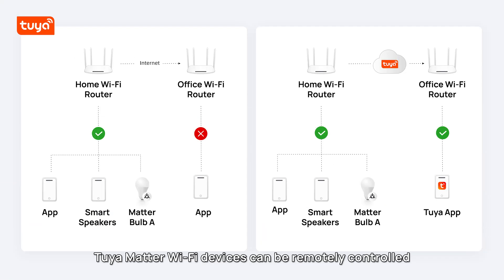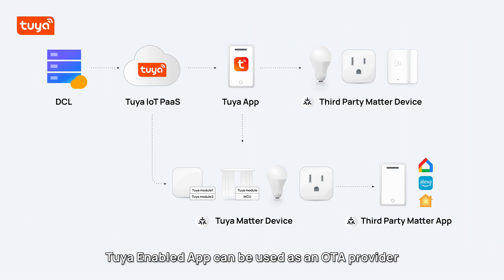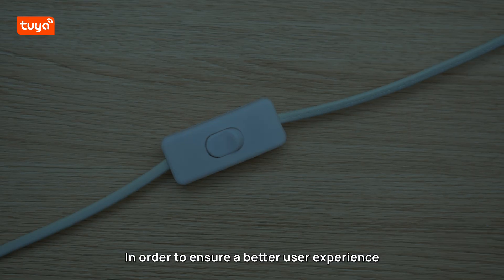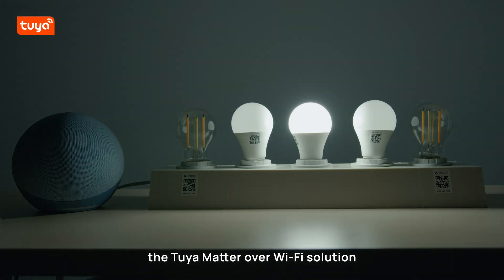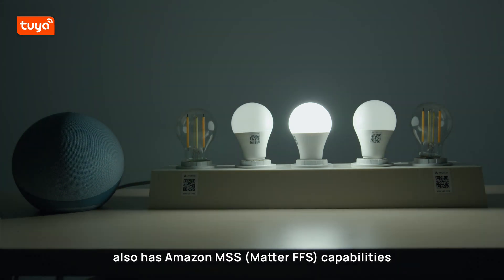Tuya Matter Wi-Fi devices can be remotely controlled through Tuya IoT without any hub. The Tuya-enabled app can be used as an OTA provider — when a Matter device requests an update, it can complete a software update for the device. To ensure a better user experience, the Tuya Matter over Wi-Fi solution also has Amazon MSS capabilities.